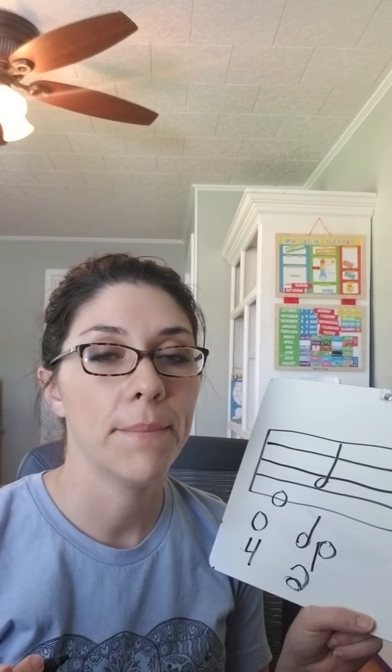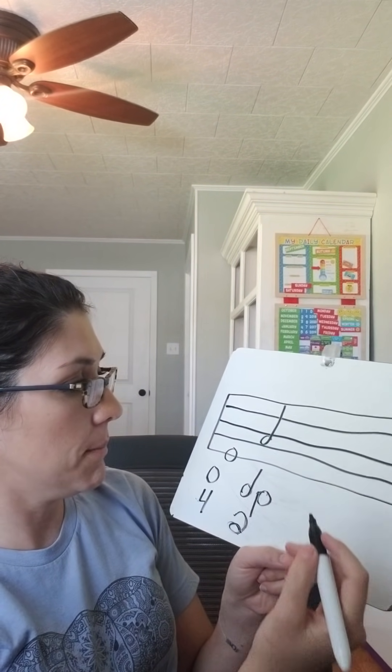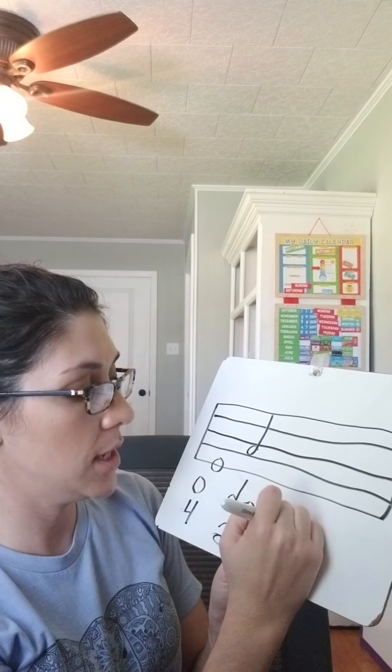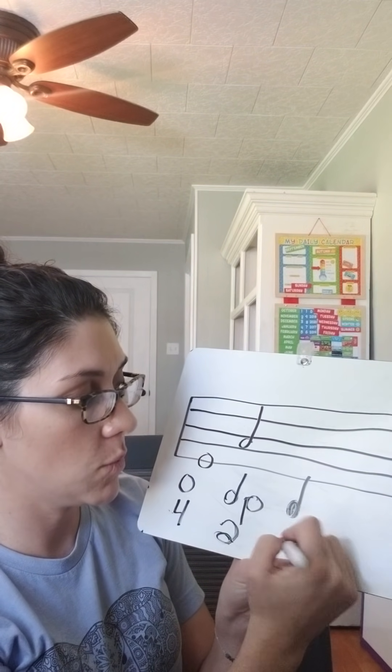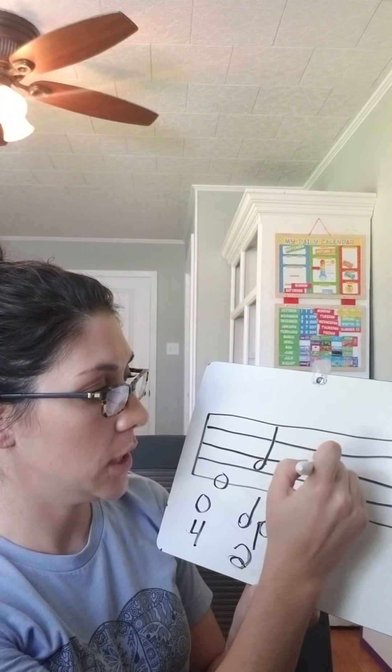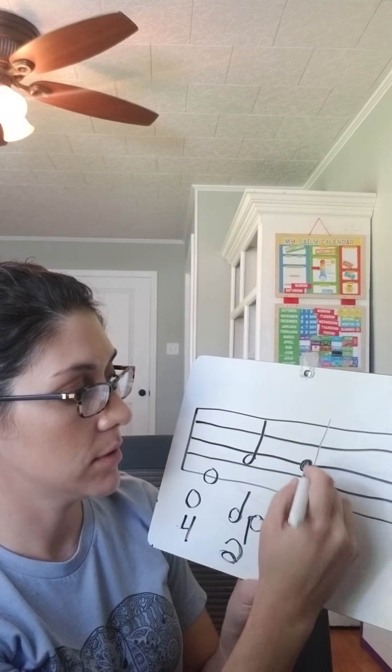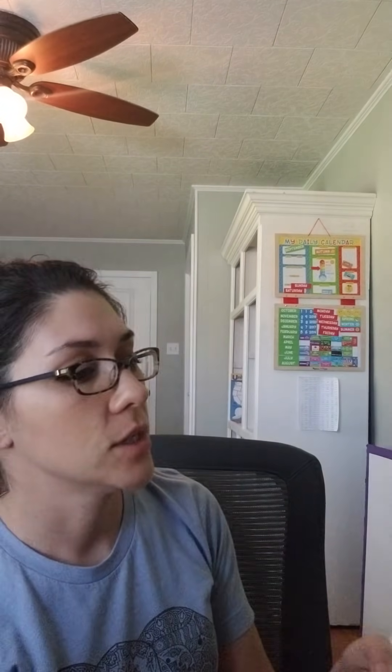The next one is a quarter note. I know it's confusing — we think 'quarter' means four, but it only gets one beat. It's a quarter of the whole note. The quarter note looks the same as a half note but filled in, and the stem can go up or down. Introduce it with 'one, two, ready, play' — just one clap, one beat.